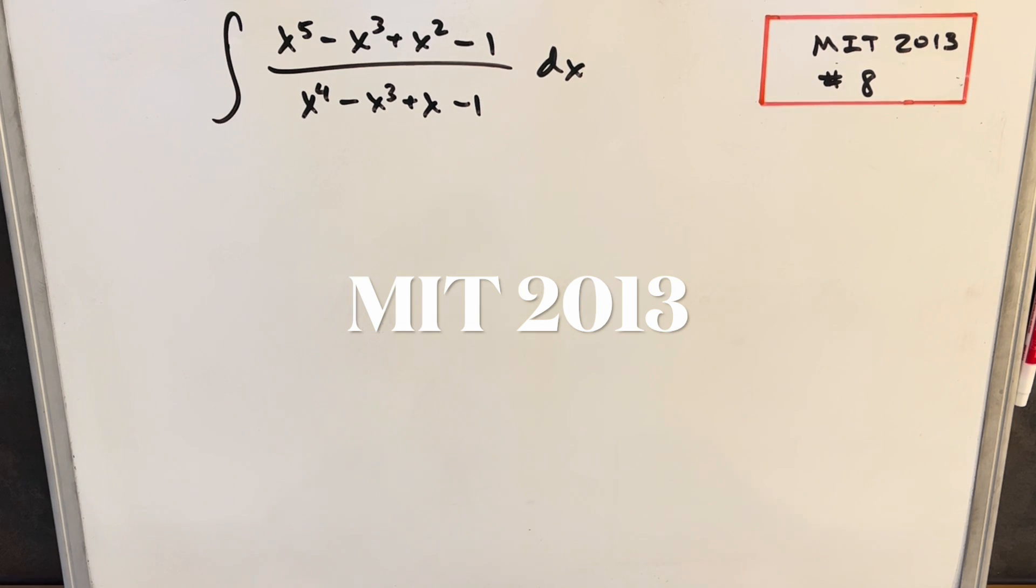Hey, it looks like I have here another integral from MIT 2013, problem 8. We have the integral of x^5 - x^3 + x^2 - 1 over x^4 - x^3 + x - 1, dx.